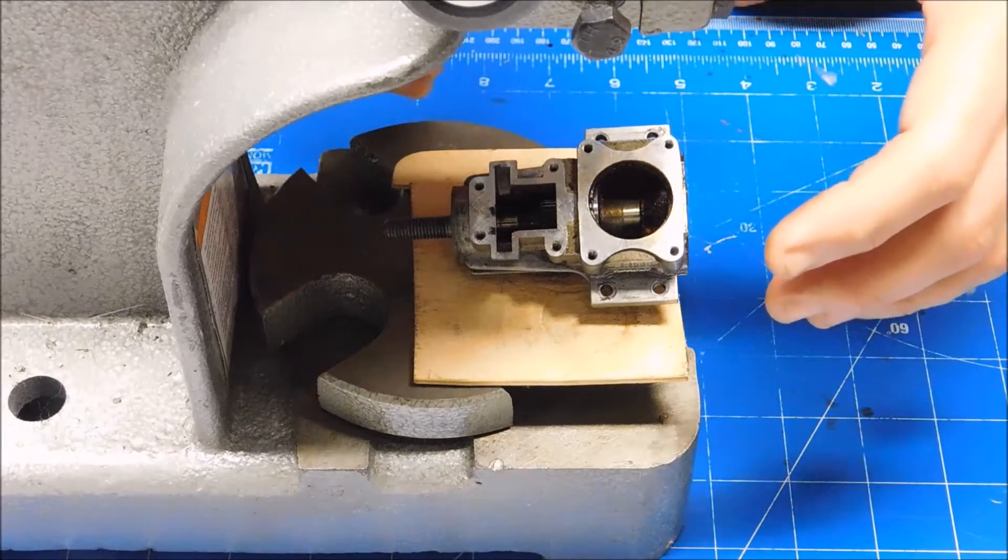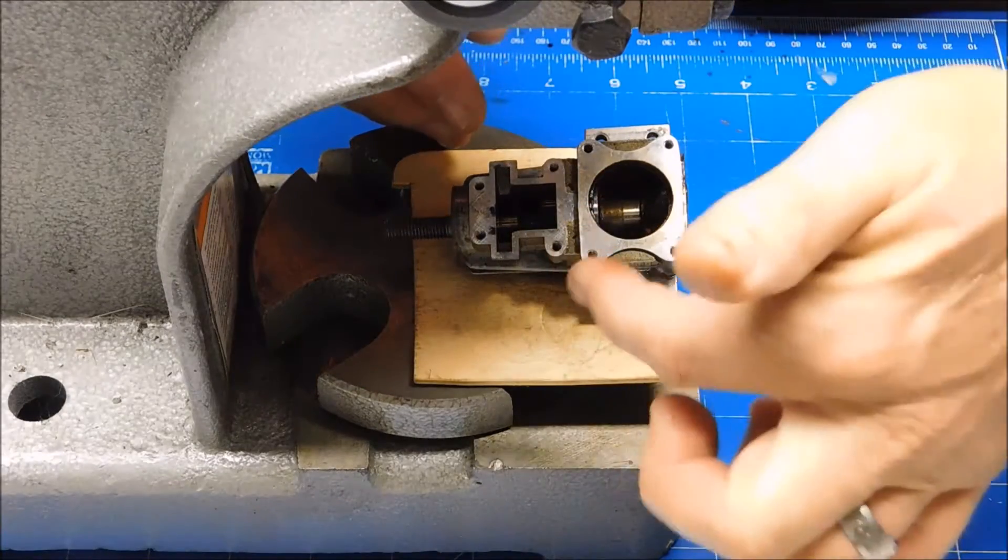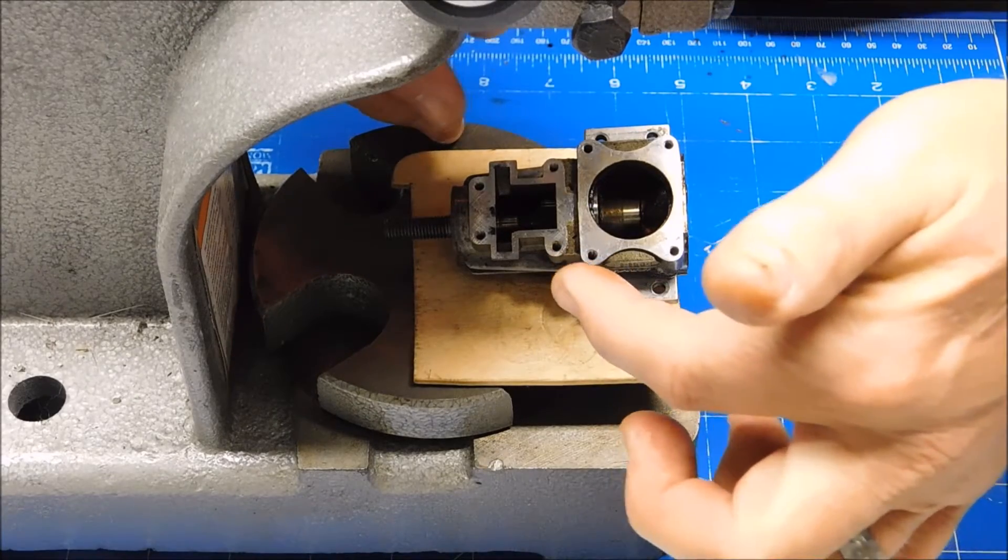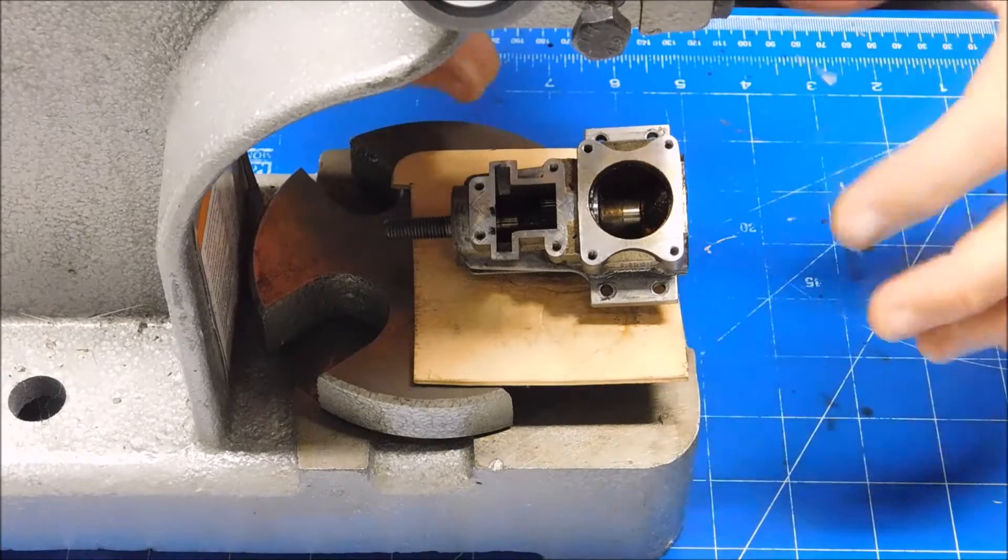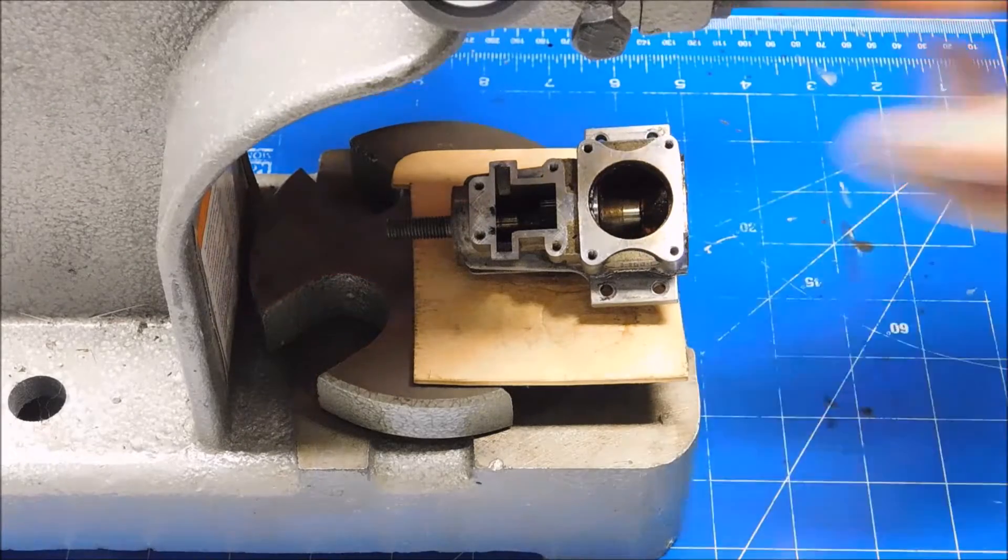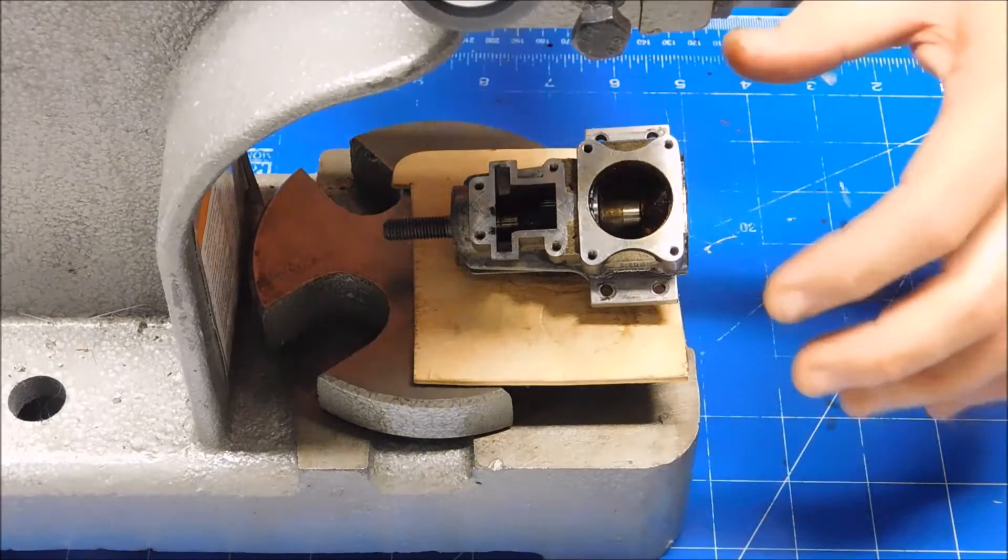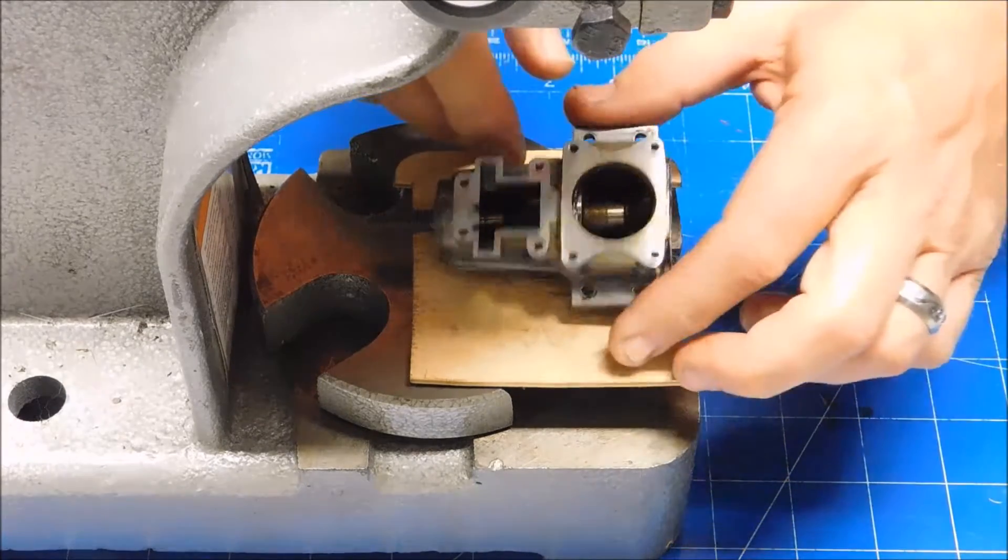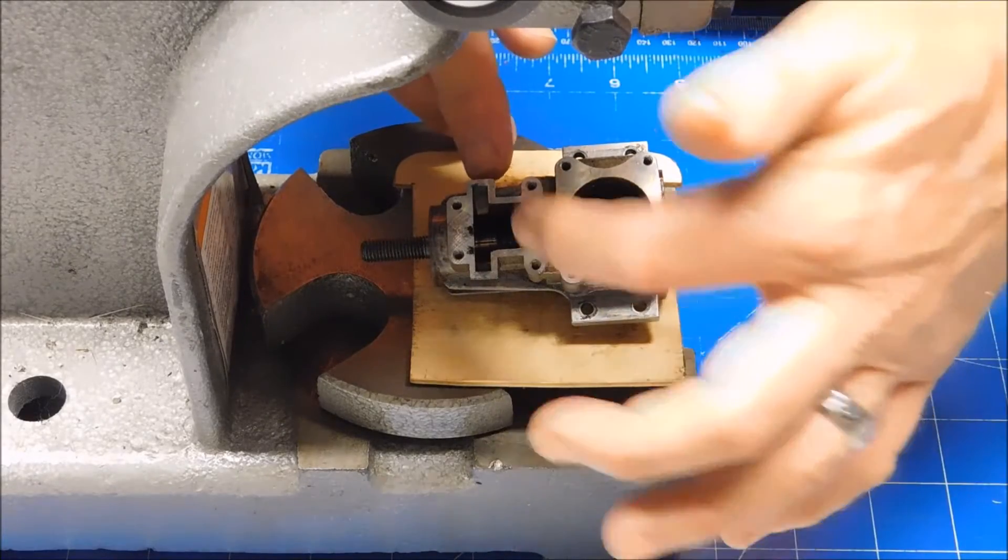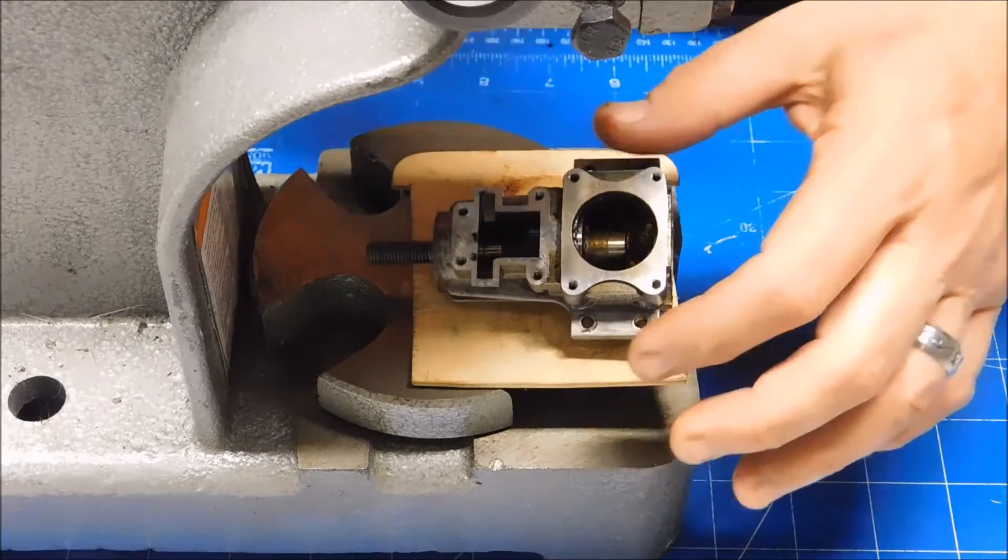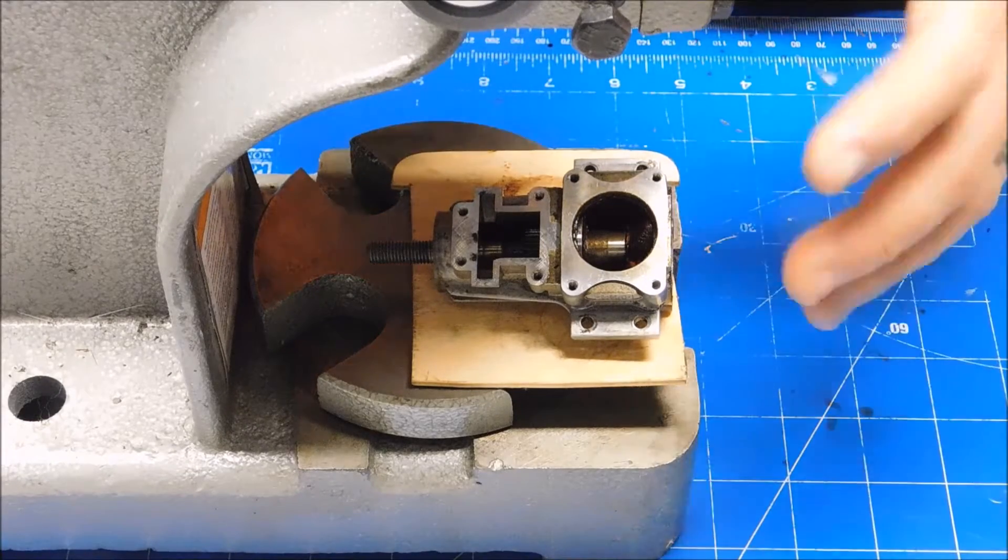Well, on the smaller Saitos there's this pinion gear that actually slides onto the crankshaft that actually engages in the timing gear on the timing case. In larger engines, 80cc and up, that is cut into the crankshaft itself. But on these smaller engines it's a slide fit.